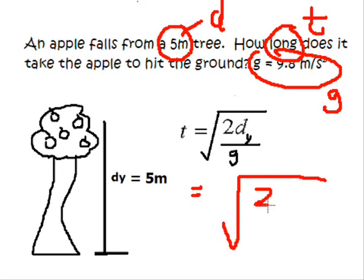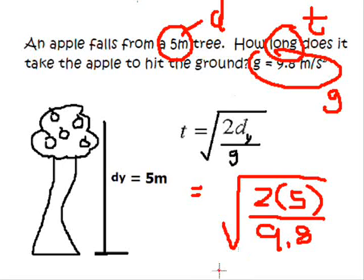So once I multiply 2 times dy, or dy is 5 in this case, that's 10, and we're going to go ahead and divide that by 9.8. And when you're punching this in the calculator, it's not a bad idea to keep the top part in parentheses and then take your square root at the end. So we end up with approximately one second.